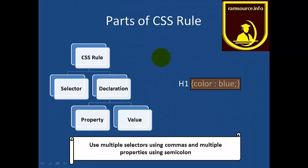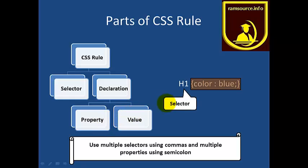Next are the parts of a CSS rule. A CSS rule has two parts: the Selector and the Declaration. The Selector refers to HTML individual tags — h1, h2, h3, paragraph tag, image tag, and text tags.